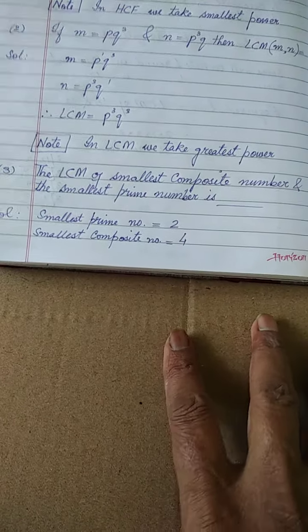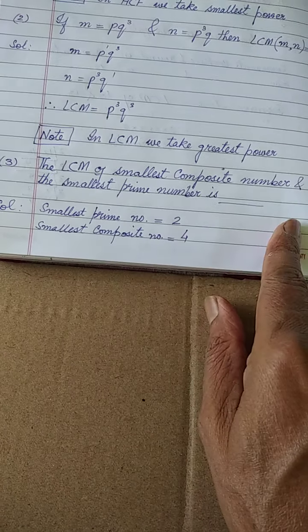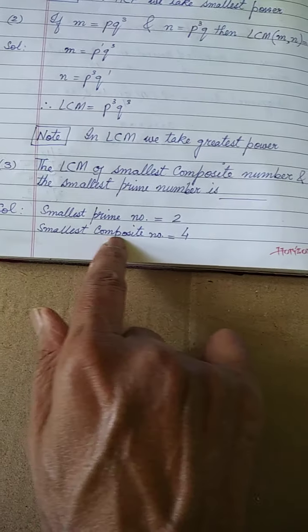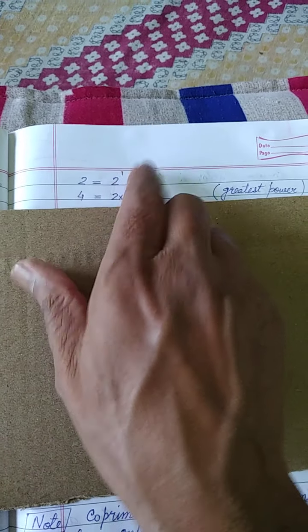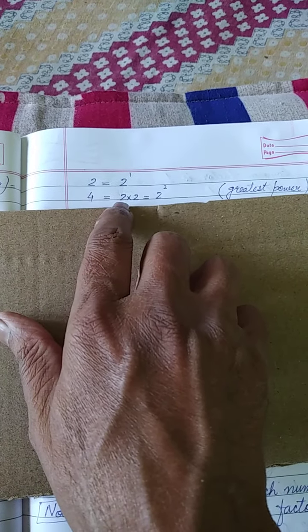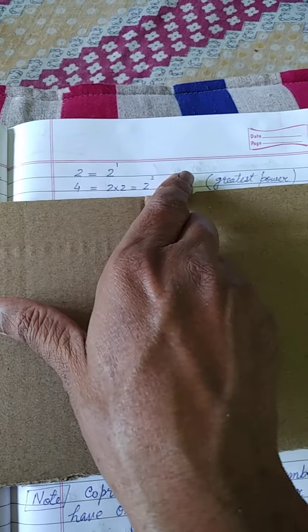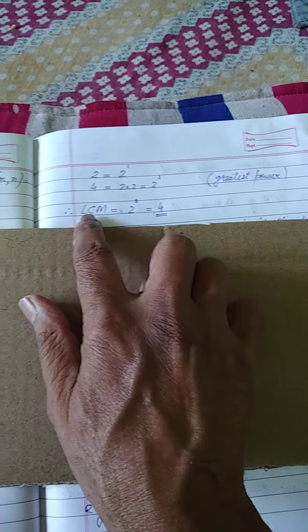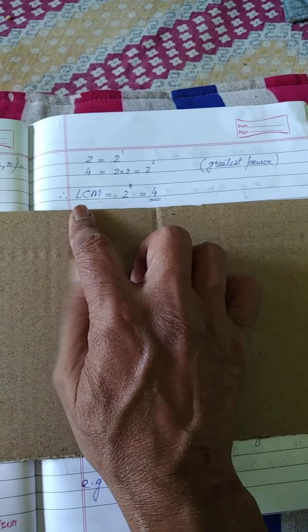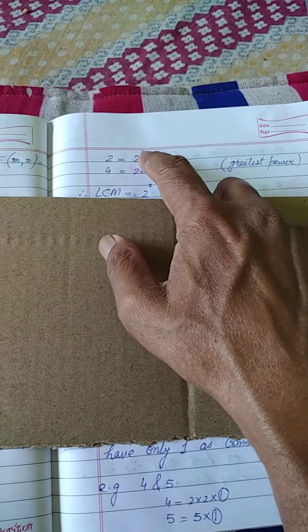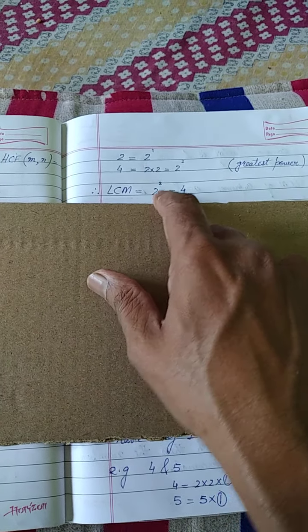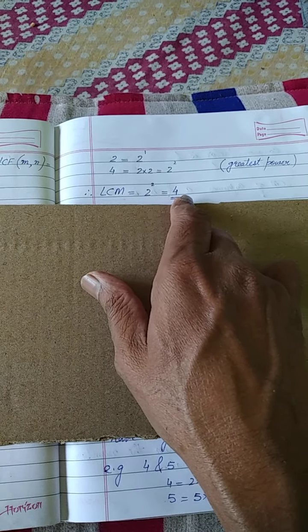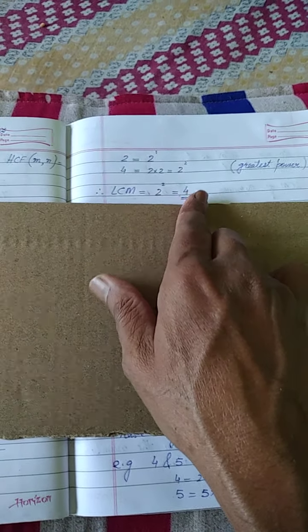Only 2 is the smallest prime number which is even also. No other number is even which is prime also — keep it in your mind. The smallest composite number is 4. If you factorize 2, it can be written as 2 raised to the power 1. 4 can be written as 2 into 2, or 2 raised to the power 2. When we find LCM, we take the greatest power. Power of 2 is 1 here and power of 2 is 2 here, so greatest power is 2. LCM will be equal to 2 raised to the power 2, which is 4. So LCM is 4.